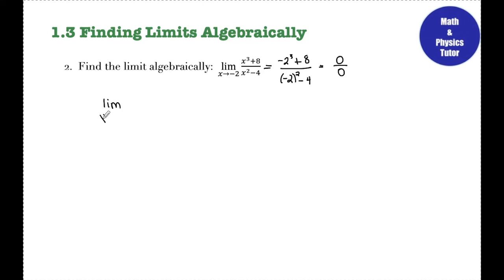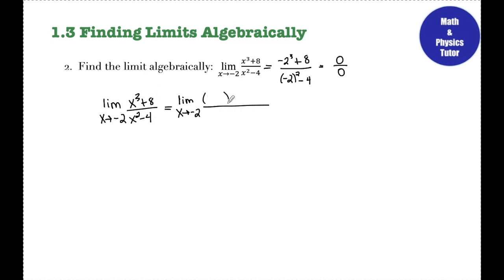I'm going to rewrite the problem. The numerator is a sum of cubes, so I can factor that; the denominator is a difference of two squares, so I can factor that as well. It's very important to keep rewriting the limit notation until you actually plug in numbers. Factoring the sum of cubes gives (x + 2)(x² − 2x + 4), using the same-opposite-positive sign pattern. The difference of squares in the denominator factors as (x + 2)(x − 2).